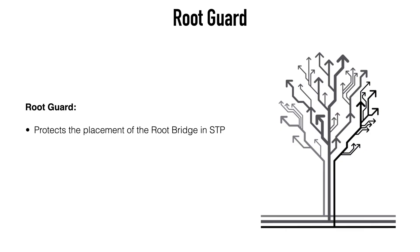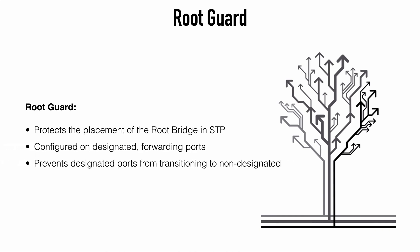The Root Guard feature is essentially the exact opposite of Loop Guard. The goal of Root Guard is to protect the root bridge placement in the network. We configure it on designated forwarding ports to ensure they do not become non-designated ports. This is fairly commonly seen in service provider networks to make sure the root bridge stays the root bridge, preventing a customer device with a superior BPDU from taking over — which would be disastrous in the service provider cloud.